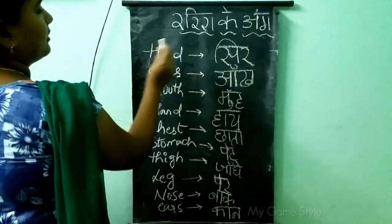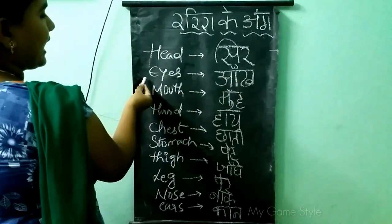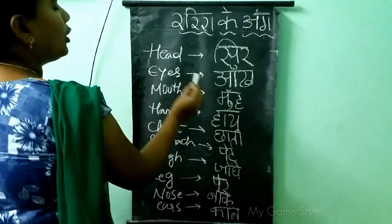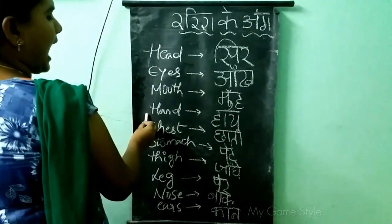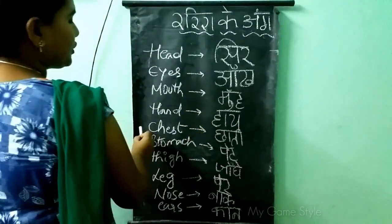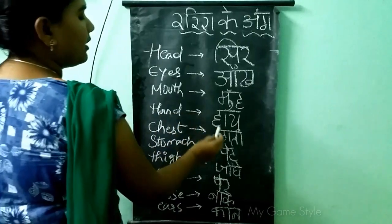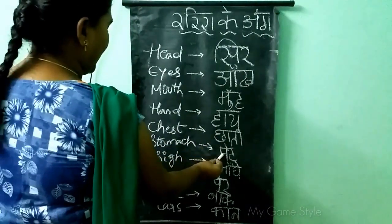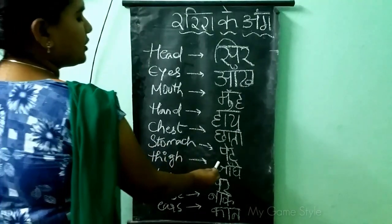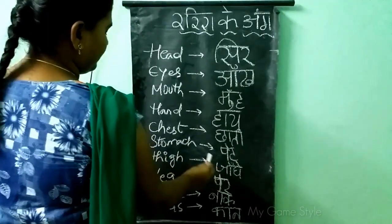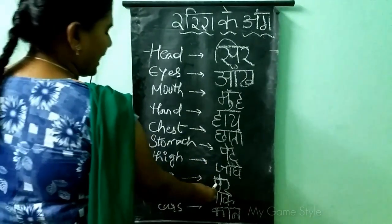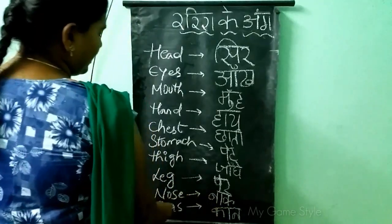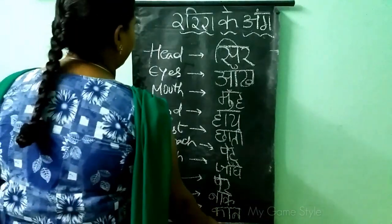Recap: Head — Sir. Eyes — Aank. Mouth — Muu. Hand. Heart. Chest — Chati. Stomach — Pate. Thighs — Jada. Legs. Nose — Naak. Ears — Kaan.